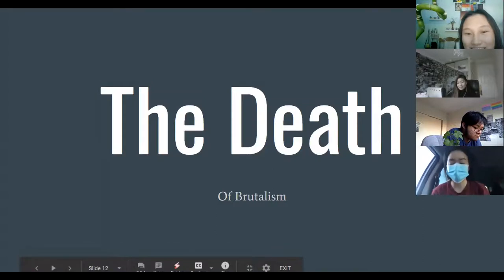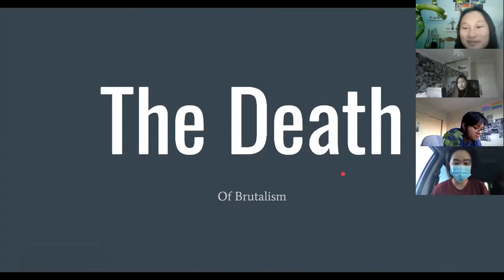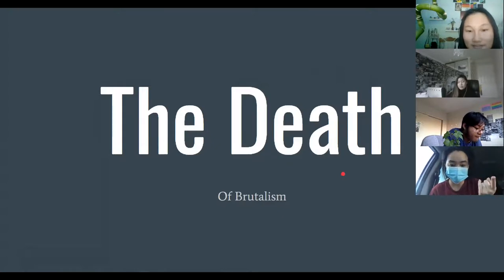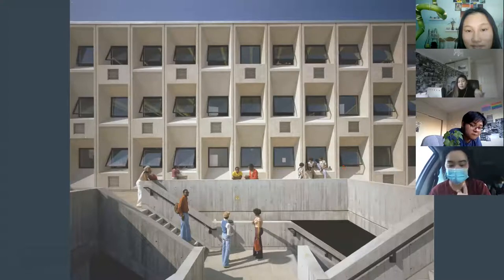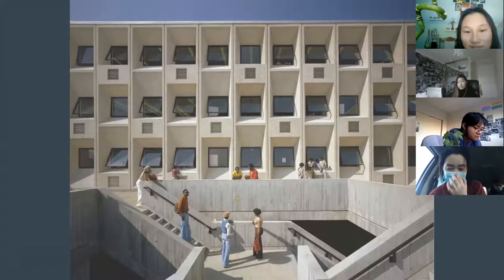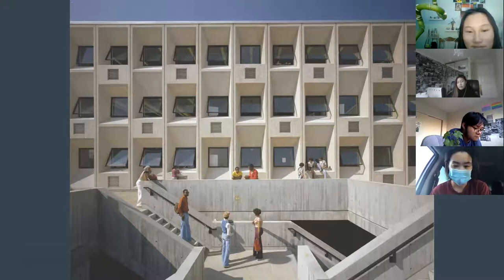A lot of brutalist architecture is being torn down. For instance, this is Madison Park High School in Boston — it's still standing, but people have tried to tear it down because they think it's ugly.